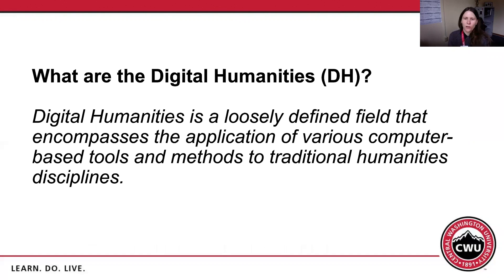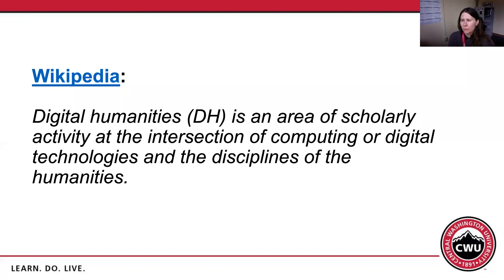So first, what are the digital humanities? The digital humanities is a loosely defined field that encompasses the application of various computer-based tools and methods to traditional humanities disciplines. Wikipedia offers another definition: digital humanities is the intersection of computing or digital technologies with the disciplines of the humanities. So scholarship and scholarly activity that's at that intersection.